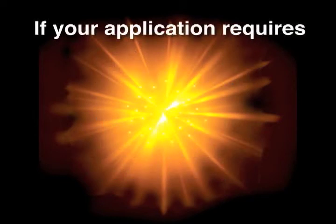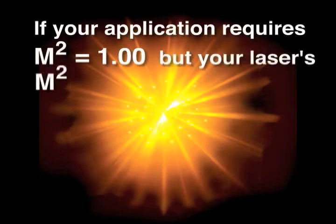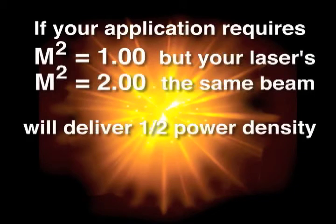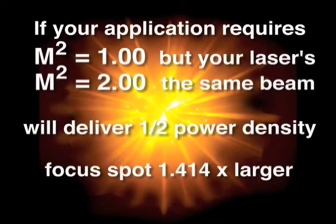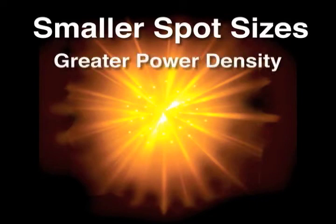If your application requires an m squared near 1, and your laser beam is an m squared of 2, your power density is one half of what it could be, and it will focus to a spot size 1.414 times larger. The smaller spot will yield peak power densities greater than the one with a higher m squared value.